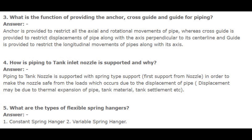Number 4. How is piping to tank inlet nozzle supported and why? Answer: Piping to tank nozzle is supported with spring-type support as the first support from the nozzle, in order to make the nozzle safe from loads which occur due to displacement of pipe. Displacement may be due to thermal expansion of pipe, tank material, tank settlement, etc.